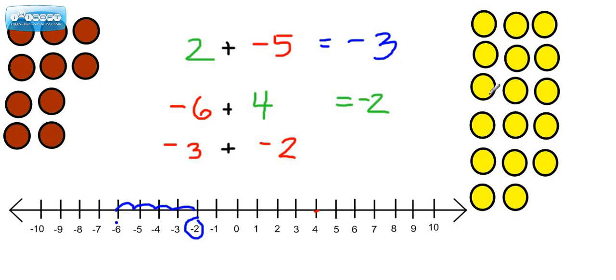Alright, now before we do this one, let's talk about these integer chips that I have here. Red is supposed to represent negative numbers, and yellow is supposed to represent positive numbers. Now if we take a look at this first one, we have 2 yellow chips, so I'm just going to drag those over here.